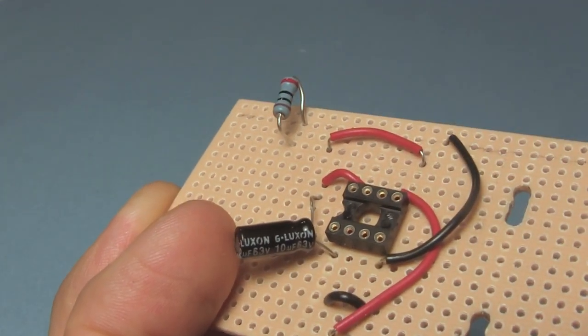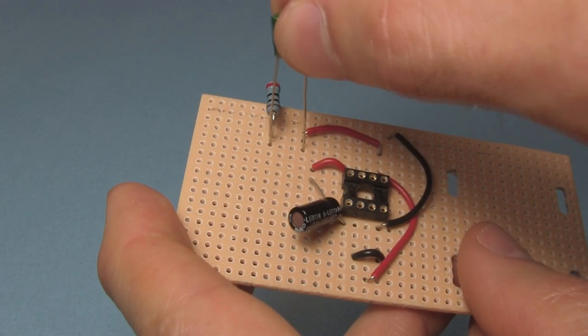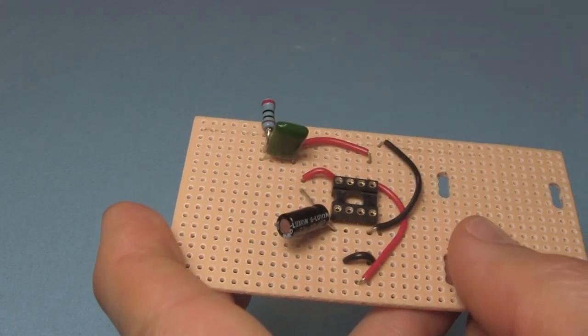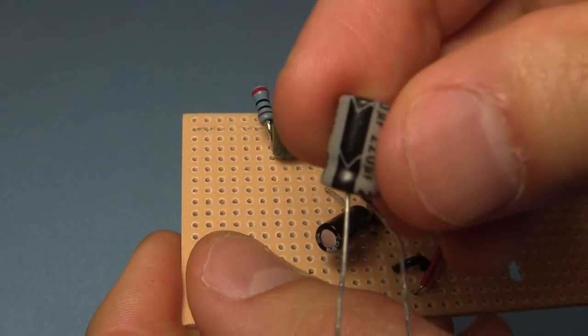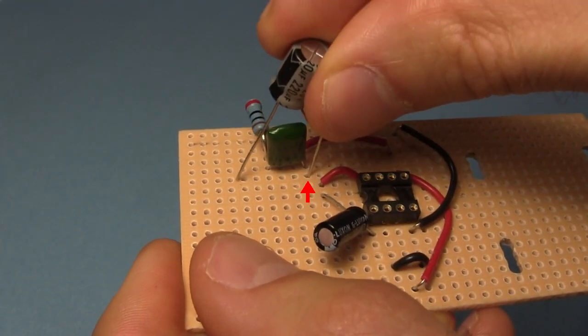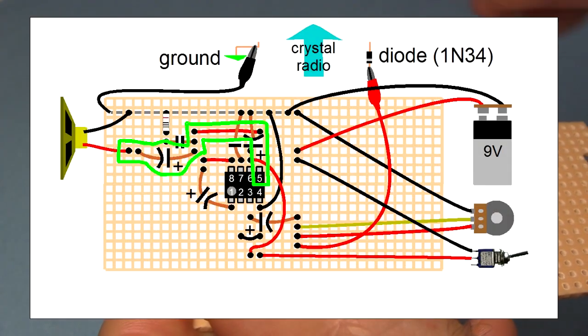Put the 10 ohm resistor in these holes. That connects one end to ground. Put the 0.047 microfarad capacitor in these holes, oriented either way. That connects it between the 10 ohm resistor we just put in and pin 5. And to finish off that area, get one of the 220 microfarad electrolytic capacitors. Put the positive leg here and the negative leg here. That connects it between pin 5 and the speaker, which we'll put in later.